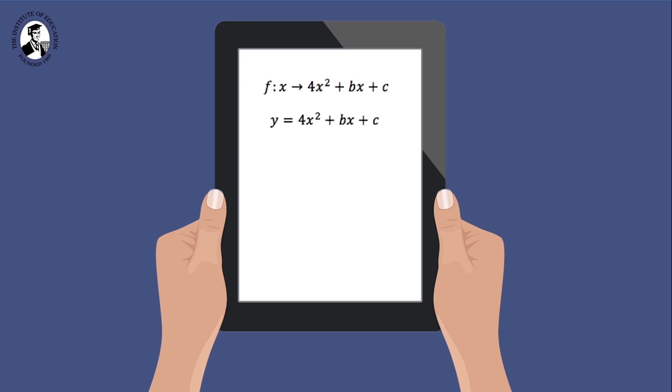We're going to take our first point, which is 2, 6. 2 being the x value, 6 being the y value, and we're going to sub it into the equation. So 6 will be equal to 4 times 2 squared plus b times 2 plus c. A little bit of tidying up and some calculation gives us 6 is equal to 16 plus 2b plus c. To finish off the tidying, minus 10 is equal to 2b plus c.